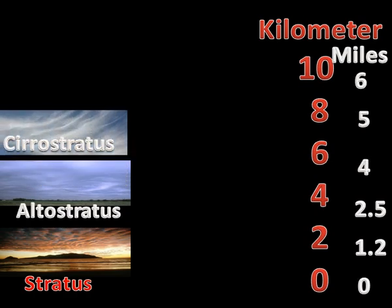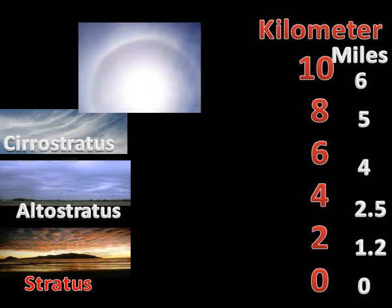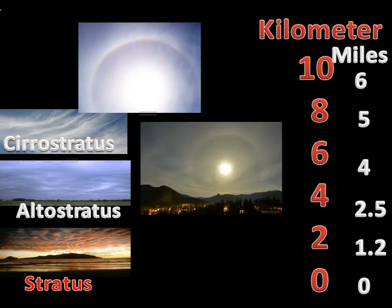Altostratus clouds are thin, generally uniform clouds composed of ice crystals capable of forming halos around the sun or moon. They are usually located above 5.5 kilometers. When thick enough to be seen, they are whitish, usually with no distinguishing features, and can sometimes cover the whole sky while being barely discernible.